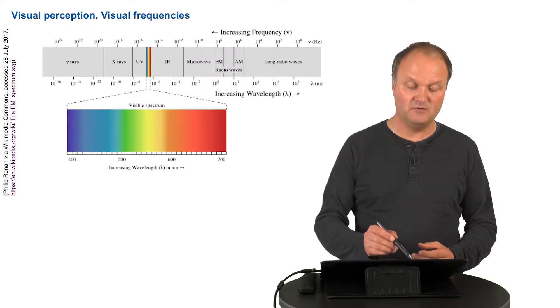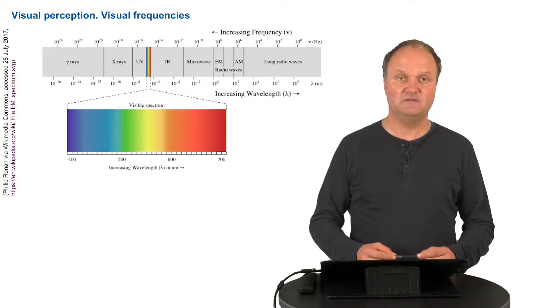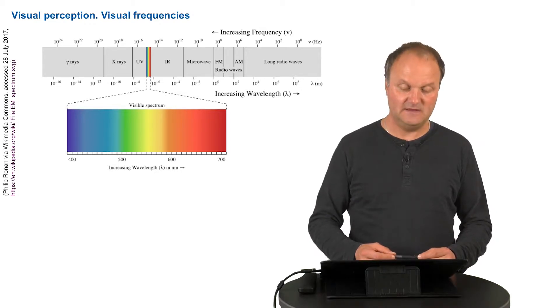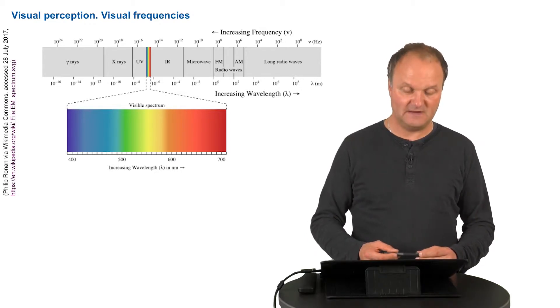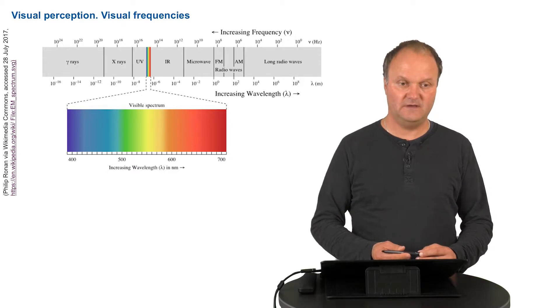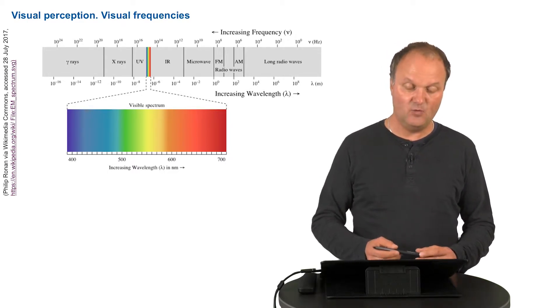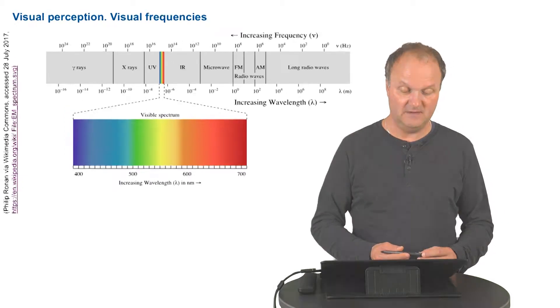Now, I already told you that our eye can perceive different types of colors. Actually, the perceptual range of light is only a very small fraction of the overall spectrum of electromagnetic waves, as you can see behind me.